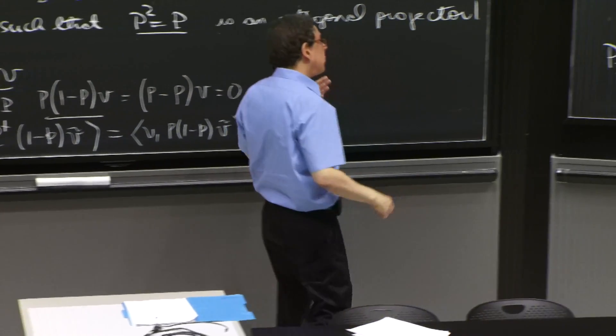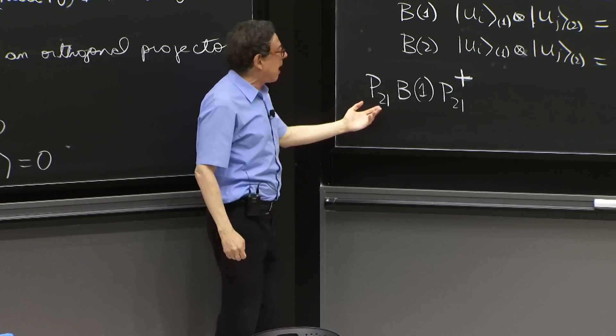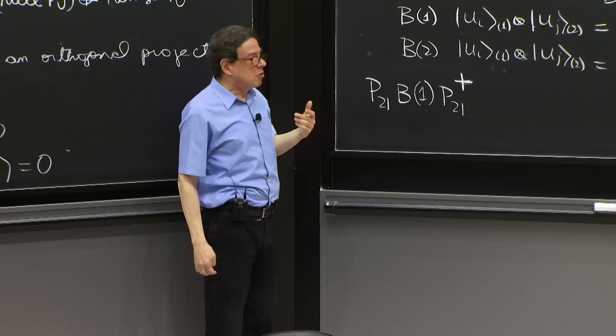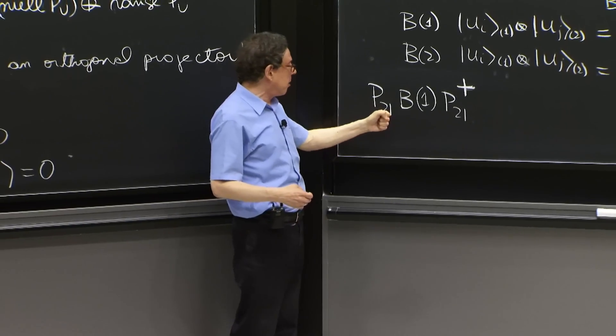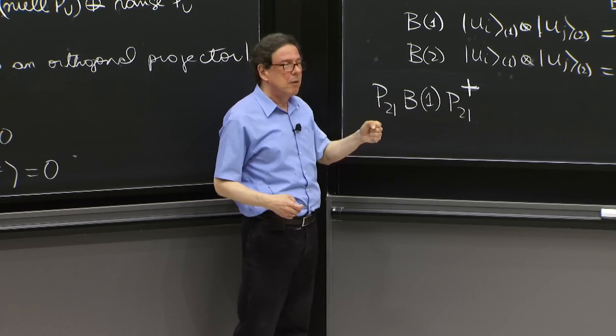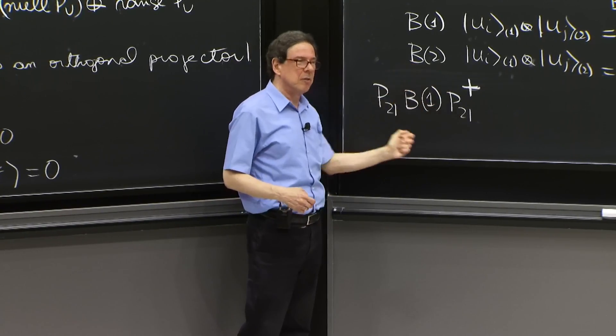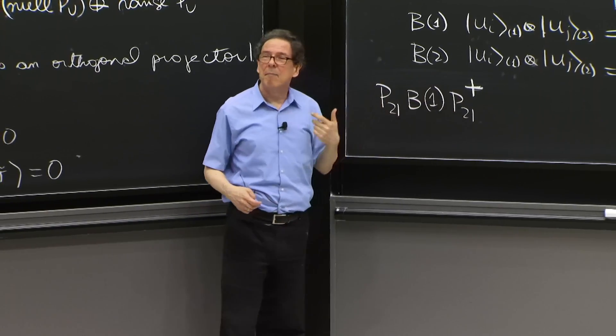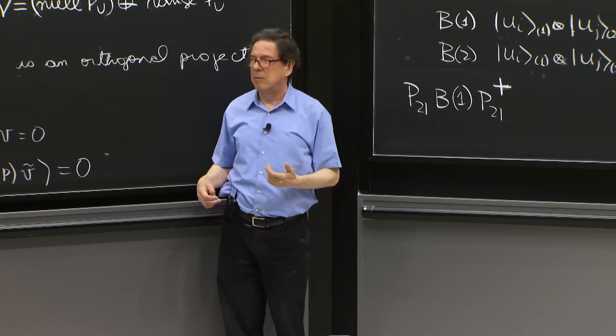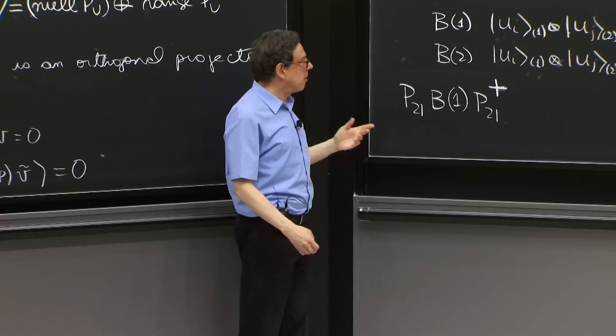So if you ask, how does the permutation operator act on B, you don't ask generally, what's the product of P times B? You ask this question. This is the question that may have a nice answer.